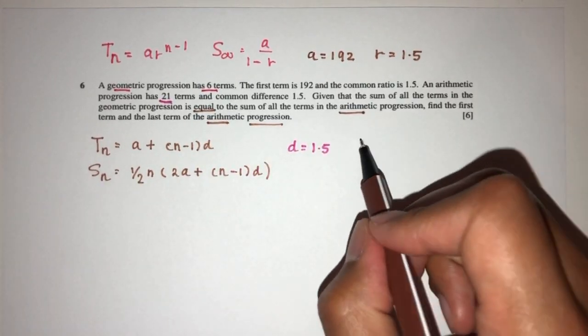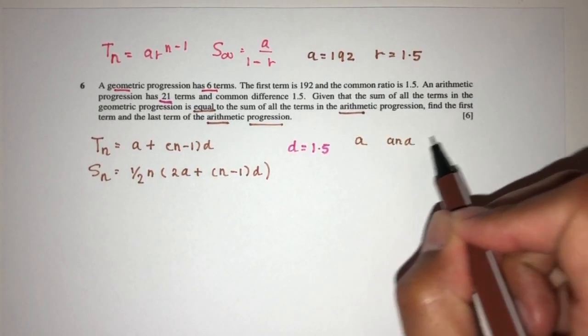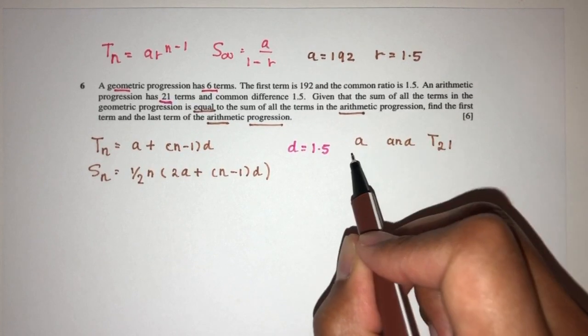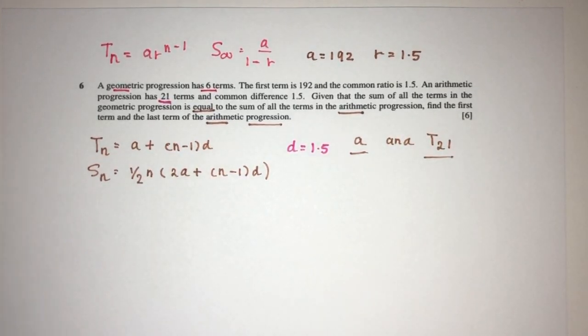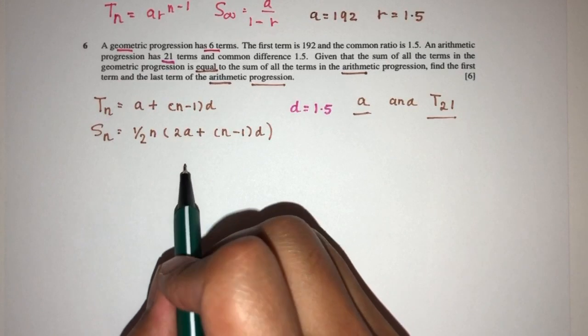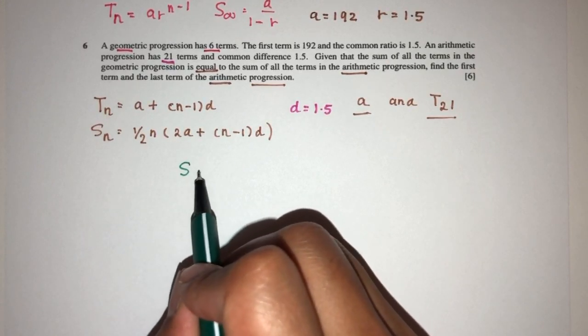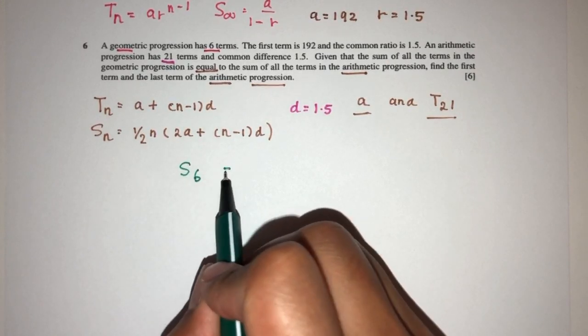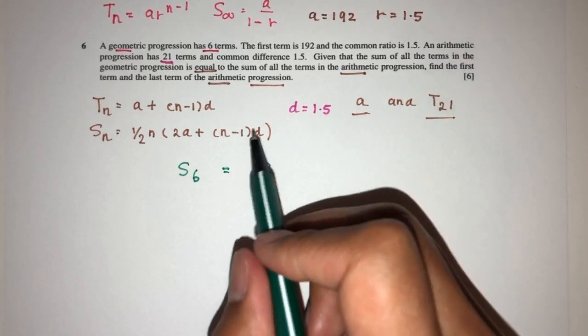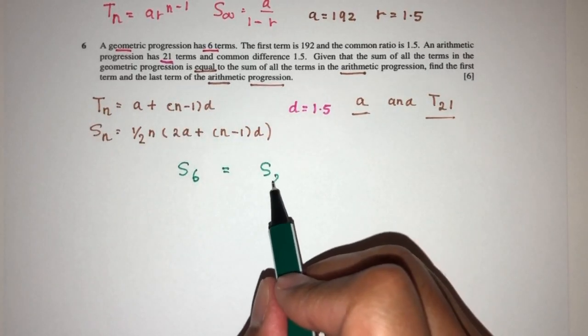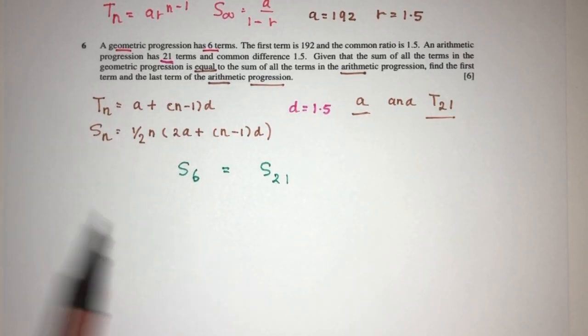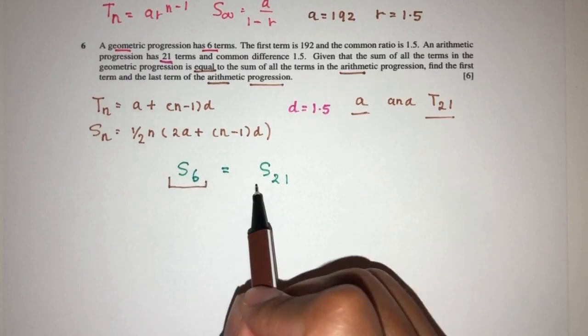We have to find a and the last term, which is the 21st term of the arithmetic progression. So, one by one. We know the sum of all the terms, the 6 terms, is equal to the sum of the 21 terms for the AP. One by one here, we have to replace for the GP and this is for the AP.